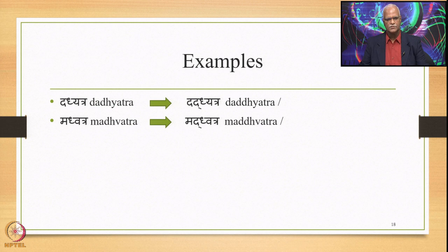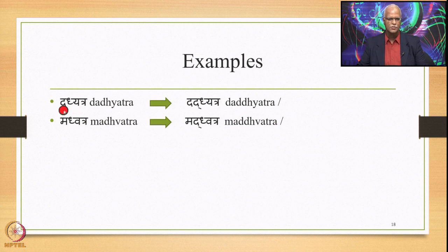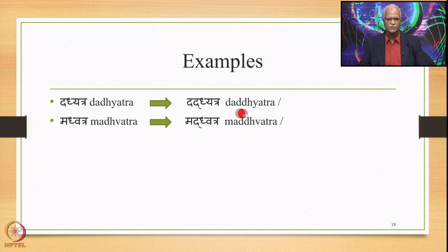Here are the examples. Dadyatra, derived after application of the sutra eco-energy, has Dady and Atra as input — so we have Dadyatra. Here A coming after D is Ach, after which comes D (Yar), followed by a non-Ach or Anach. So we have Ach + Yar + Anach and this Yar gets reduplicated. After reduplication, the first D is substituted by the application of Jhalamjash Jhashi, giving Dadyatra. This is optional, so we also get Dadyatra without reduplication.